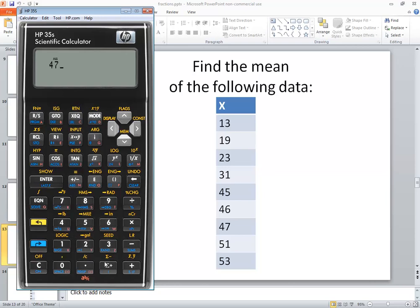47, sigma plus. 51, sigma plus. And 53, sigma plus. And it tells us we've got nine numbers, which is correct.